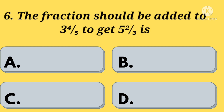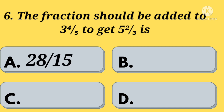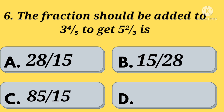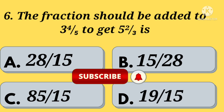The fraction that should be added to 3 and 4 by 5 to get 5 and 2 by 3 is — Option A: 28 by 15. Option B: 15 by 28. Option C: 85 by 15. Option D: 19 by 15. Your time starts now.